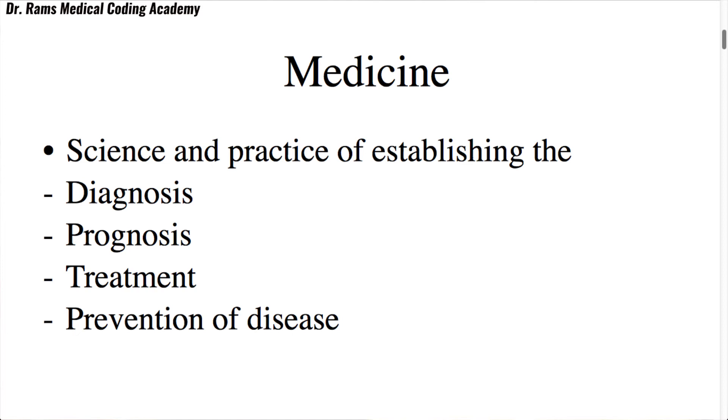Before going to the coding system, we need to know what coding of medicine is. Medicine is a science and practice of establishing diagnosis, prognosis, treatment, and prevention of disease. Diagnosis is the final identification of a disease by the patient's presenting symptoms, signs, and investigations. Prognosis is the future course of the disease — whether treated or untreated. Treatment is when the patient comes in for care. And finally, prevention — as we know, prevention is better than cure.